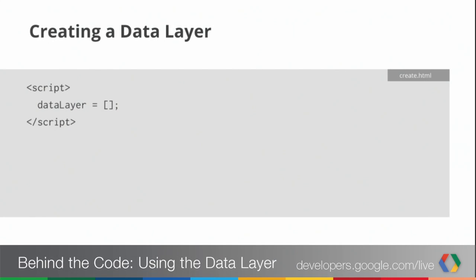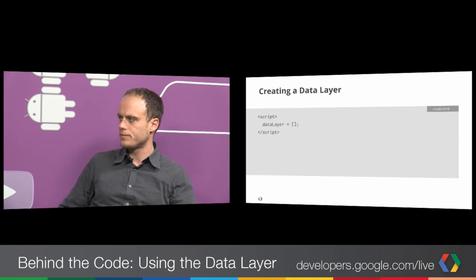Every vendor has their own different way of capturing data — some have synchronous APIs, some have bootloaders that have to come in before anything happens. We wanted to avoid all that. The data layer really is a basic JavaScript array. It starts as a piece of code you can put directly in the page — there's no bootloader, no piece of JavaScript that has to load and provide APIs.